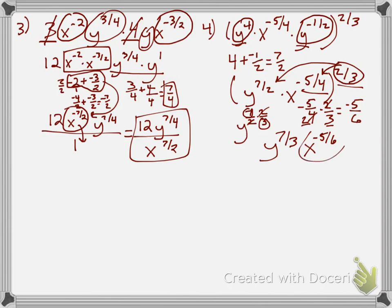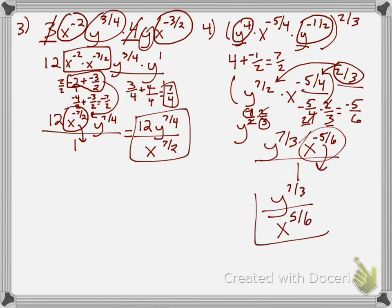The only problem is the negative exponent on x, so we drop it downstairs to make it positive. My final answer is y to the seven-thirds over x to the positive five-sixths.